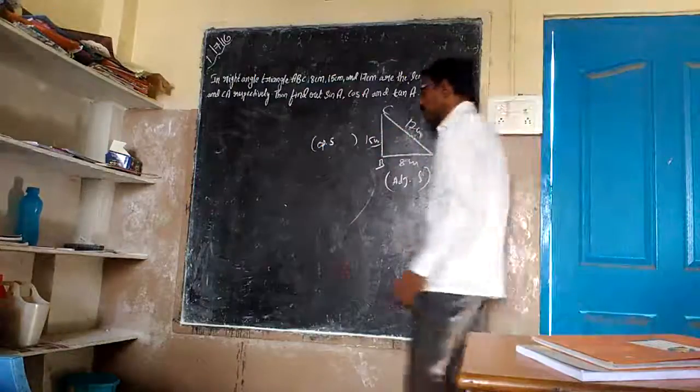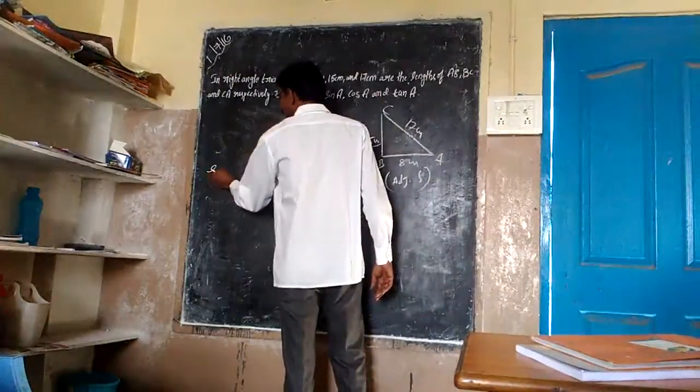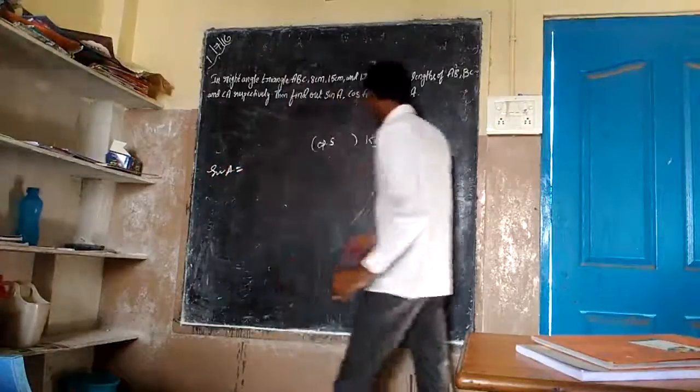First, we start with sin A. So, sin A is equal to opposite side over hypotenuse.